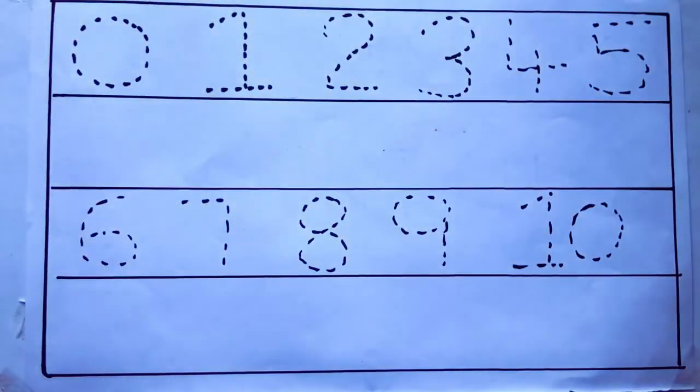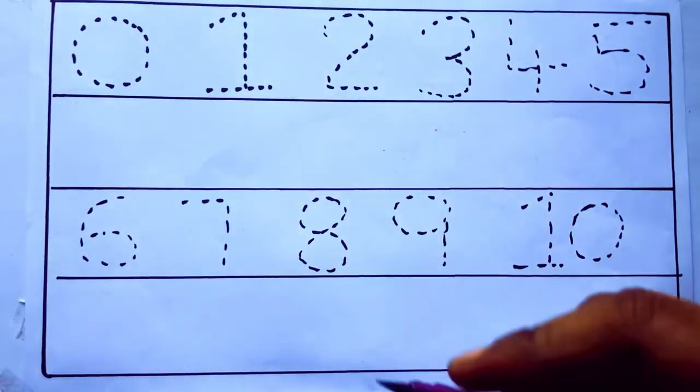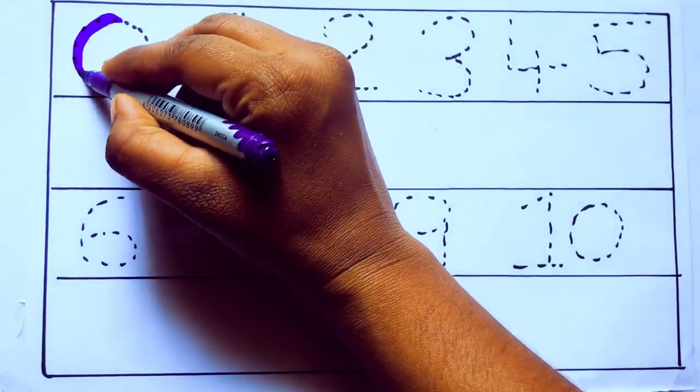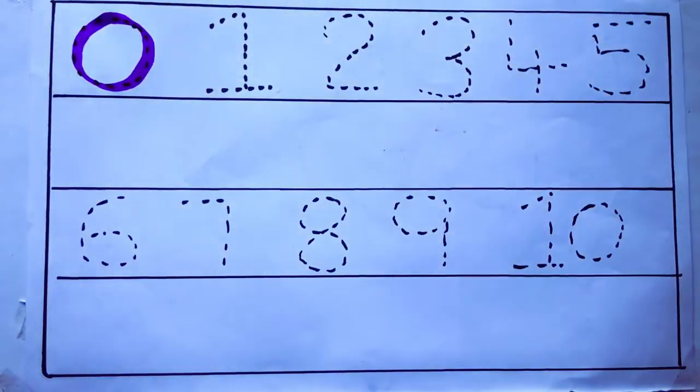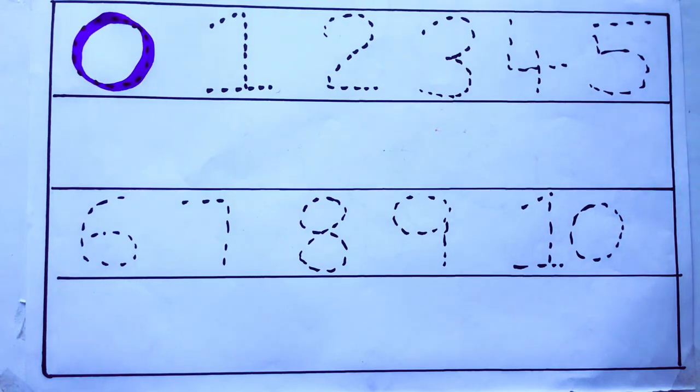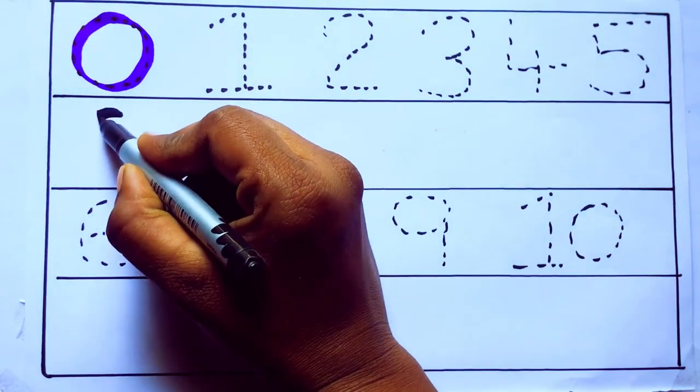Let's draw numbers. Violet color 0, Z-E-R-O. Violet color is 0, 0, 0, 0.